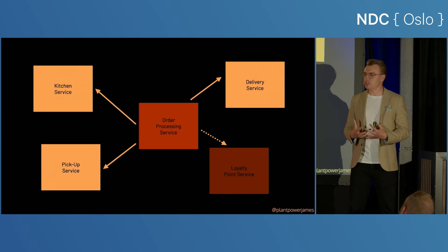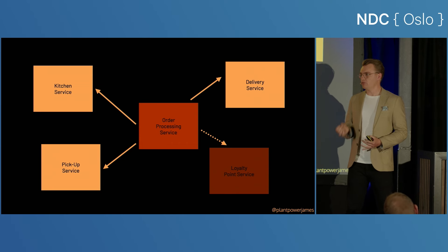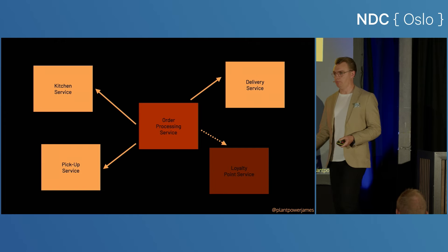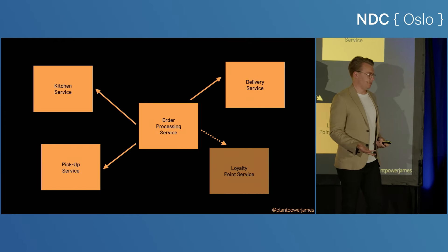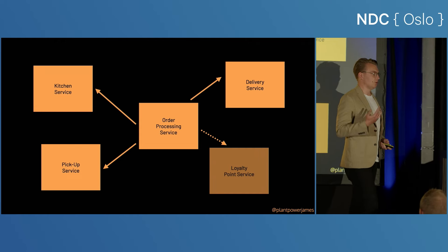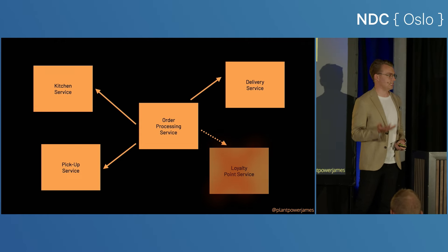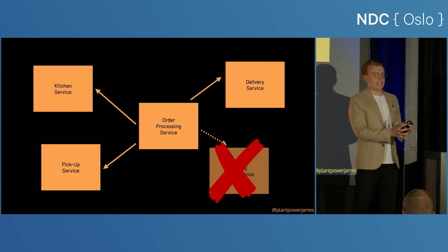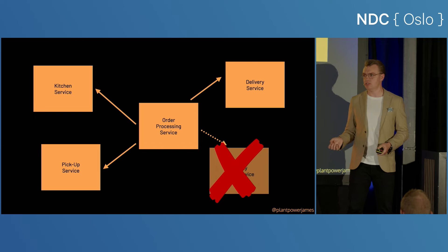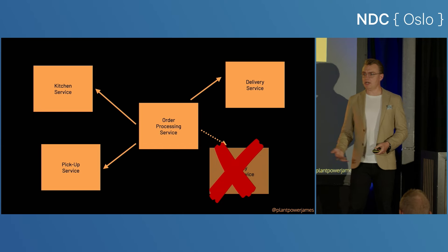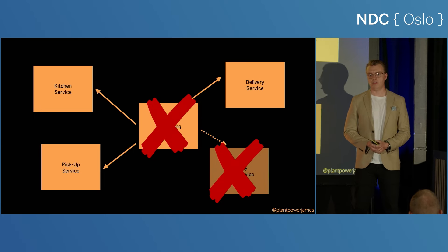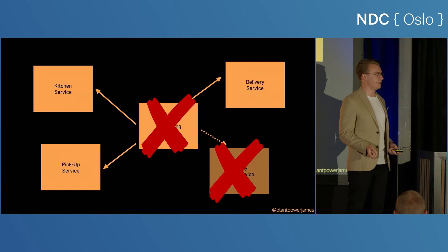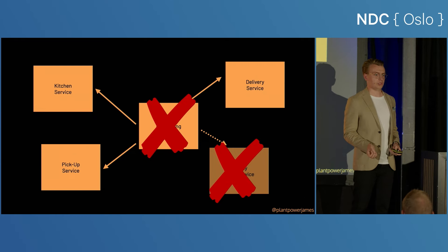Should the order processing service actually care about the fact people are collecting loyalty points? Maybe it does, maybe it doesn't. There's another challenge: if the loyalty point service fails and you have this synchronous coupling, and this loyalty point service isn't on the core domain — it's not something that means people can't get their pizzas — if that fails, it can have the knock-on effect of also causing your order processing service to fail. So a service not on the critical path has caused failure to something on your critical path.